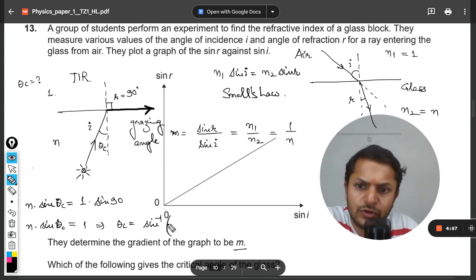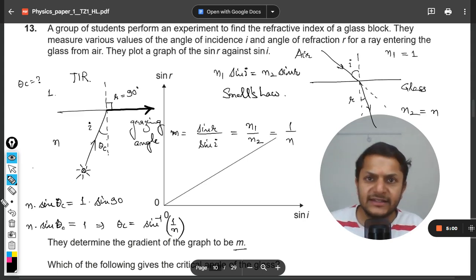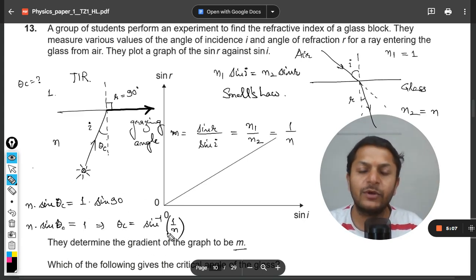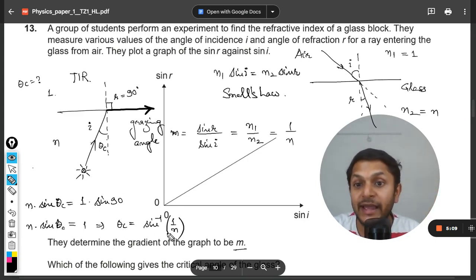Theta critical is equal to sine inverse one by n. Isn't it? Because this n will go to the other side and the sine will be taken as inverse. So theta critical will be equal to sine inverse of one by n.